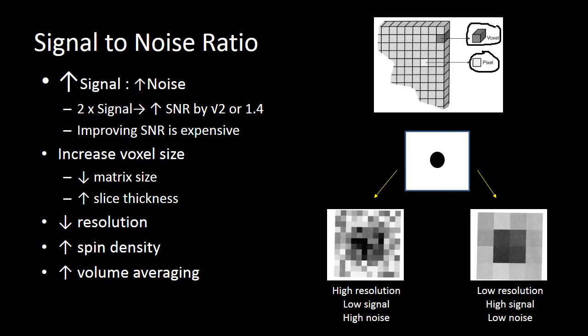The problem with increasing voxel size and slice thickness is that we have more volume averaging. Here we have a graphical representation: a circle. If we sample that circle with high resolution and high noise, it's a pretty bad image even though it's high resolution. If we go with a high resolution and high signal representation, the noise is not as apparent, and we get a square representation of our circle. In this case, I think I would sacrifice resolution for more signal, because that square is a better representation than the noisy high-resolution image.